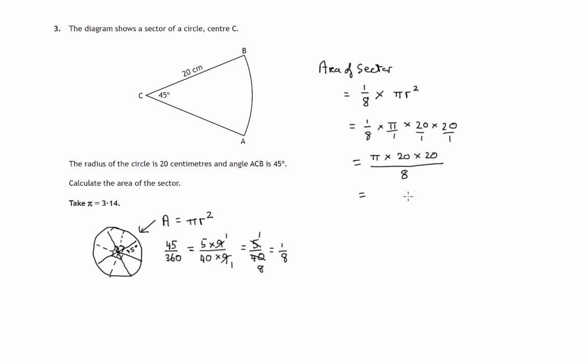And there is a bit of cancelling. 4 goes into 8 twice, and 4 goes into 20 five times. We've still got a factor of 2 left: 2 into 2 goes 1, 2 into 20 goes 10. So we're left on the top line with 5 times 10, which is 50 times π.